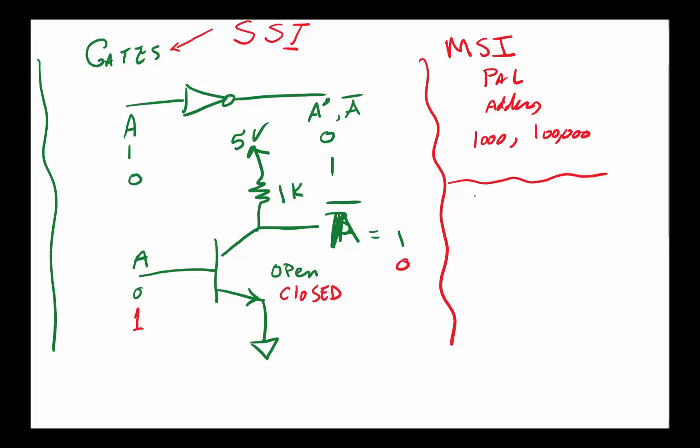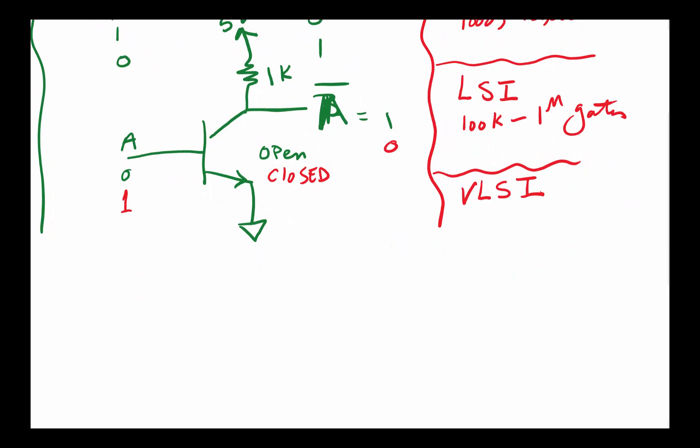The next level is what we call large-scale integration (LSI), and these have somewhere between 100,000 to about a million gates. They can implement more complex functionality. Most processors we use these days are called VLSI, which stands for very large-scale integrated circuits, and these will have anywhere from a million to billions—20, 30 billion or more gates. Your chips and processors, whether Apple or Microsoft-based, all have multiple billions of gates and transistors in them.